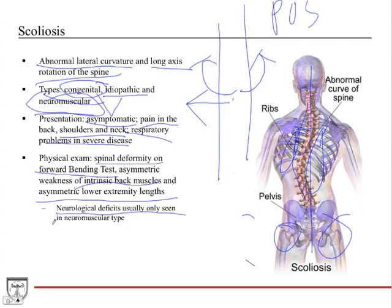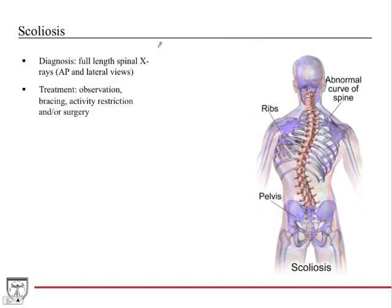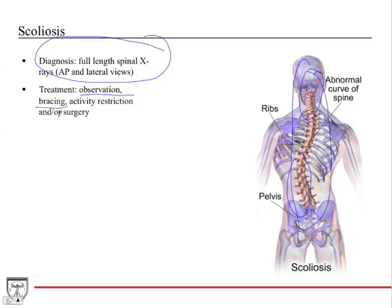Neurological deficits are usually only seen in the neuromuscular type due to underlying neurological problems, but can also appear in very severe scoliosis. Diagnosis requires a full-length spinal x-ray, both AP and lateral views — you want to see the whole spine. Treatment includes observation, bracing for severe cases, activity restrictions, or surgery. Surgery is reserved for very significant cases causing symptoms; most patients do not receive surgery.